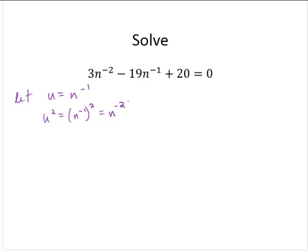This is a good thing because now I can replace the n to the negative second. So I can then write 3u squared minus 19u plus 20 equals 0. And now I just have to solve this equation.